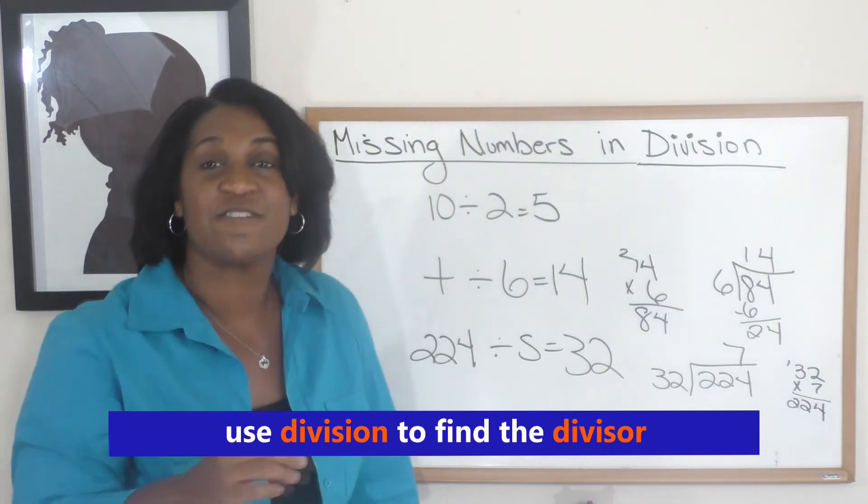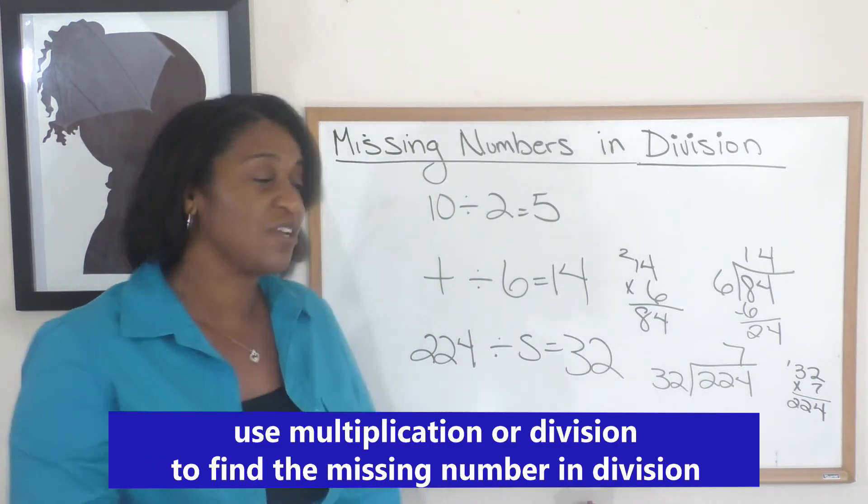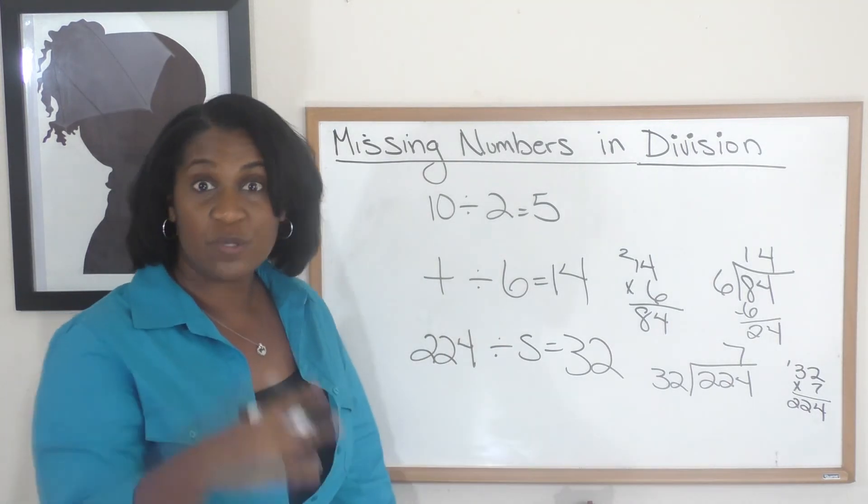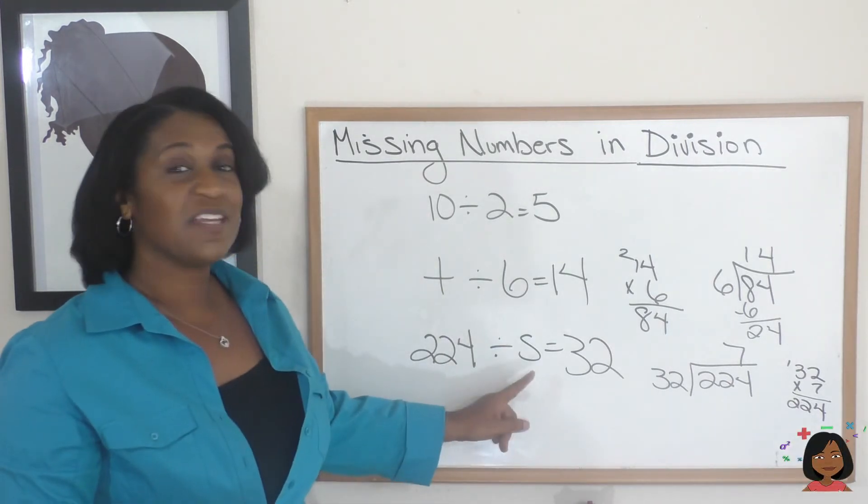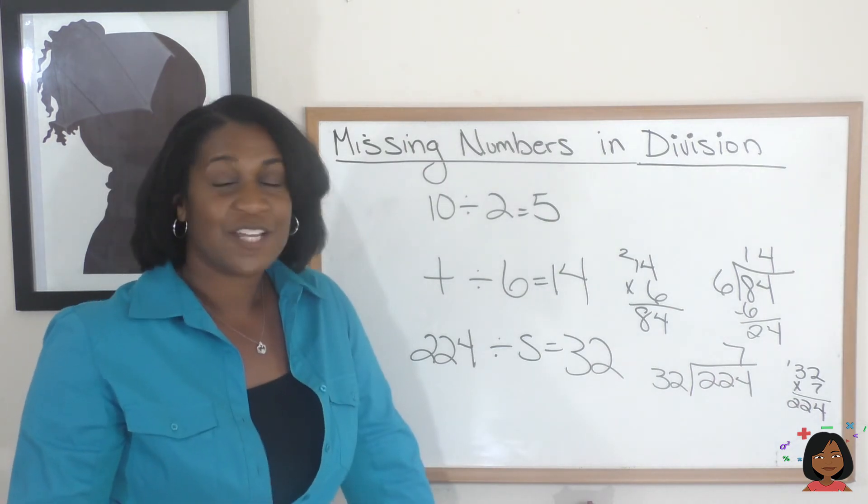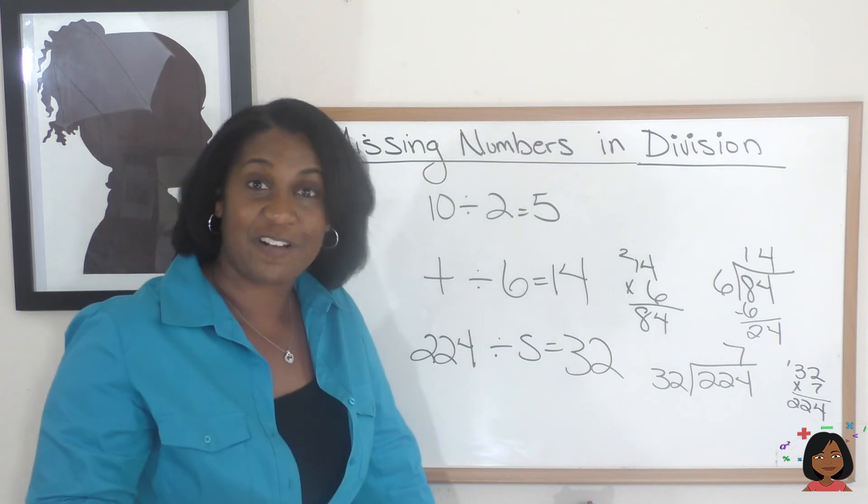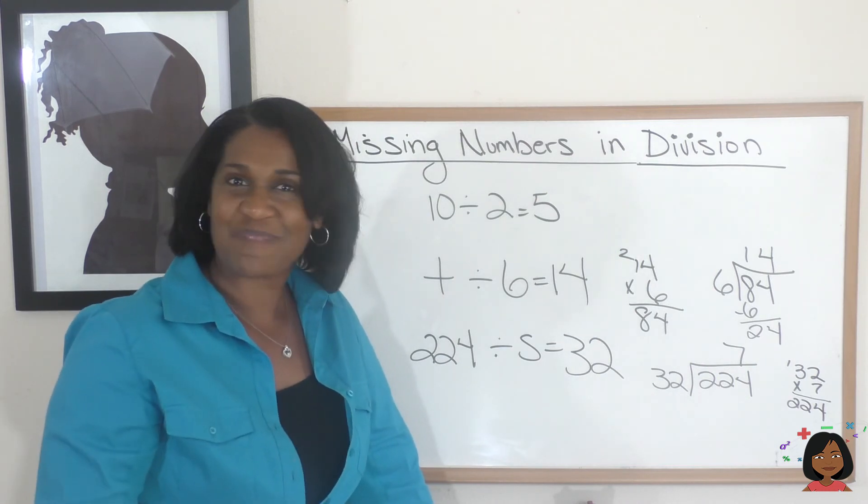So when we have a missing number in division, we can either use multiplication if that missing number is the dividend, or use division if it's the divisor. It just depends on what you're looking for. And that's it, pretty simple. See you soon, bye!